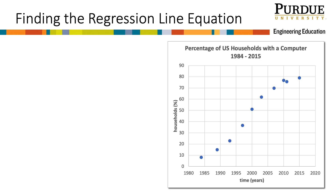The engineer plotted the data in Excel. The data appear roughly linear, so the engineer wants to use linear regression to estimate the relationship between year and percent. How can we find a linear model that best fits the data?